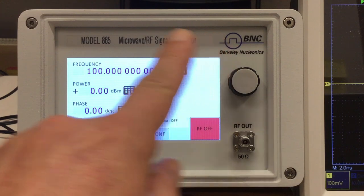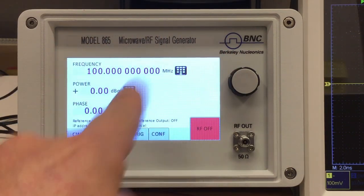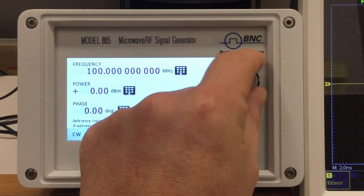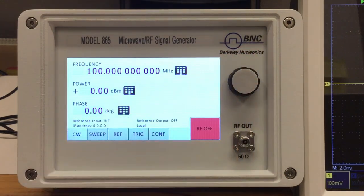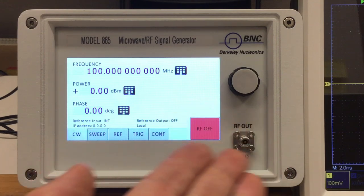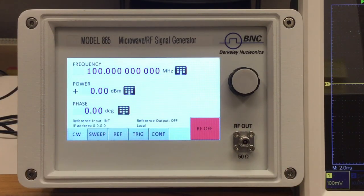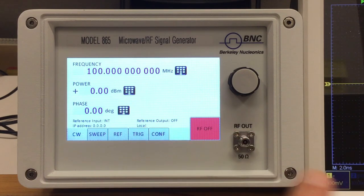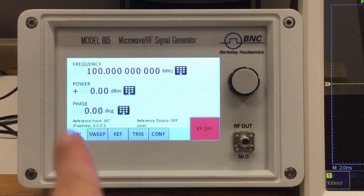Besides the rather large and bright display, which is a touchscreen by the way, the only other things at the front are a rotary knob, which I will show you the use in a second, and the RF output connector, which is for my dash-40, 40 gigahertz model, a 2.92 respectively K-type connector. There are lower frequency versions available and these have I think SMA connectors. Anyway, let's connect the oscilloscope and play around a little bit.